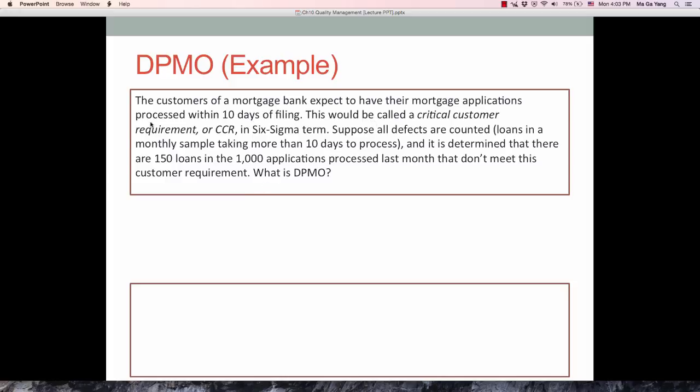This is the mortgage application problem. In this case, the mortgage application process should be done within 10 days of filing. Less than 10 days of filing is good for customers. From Six Sigma point of view, that's the normal product. But if it processes over 10 days, taking more than 10 days to process, that's regarded as defect. It is determined that there are 150 loans in 1,000 applications processed last month that don't meet this customer requirement.